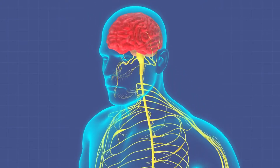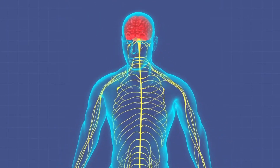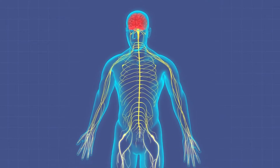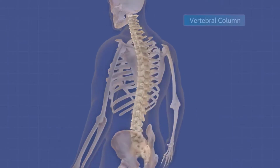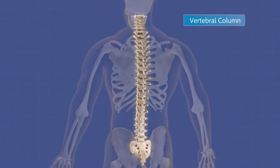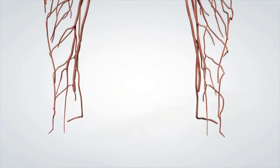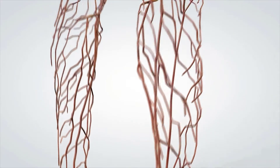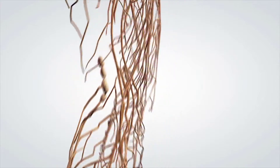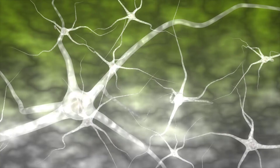There are two major subdivisions in the autonomic nervous system: the sympathetic division and the parasympathetic division. Visceral efferents from the thoracic and lumbar segments form the sympathetic division of the autonomic nervous system. The sympathetic division, also known as the thoracolumbar division, can be thought of as the fight-or-flight system.